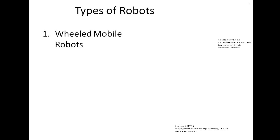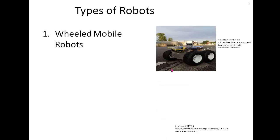For mobile robots, the first category is wheeled mobile robots. They have normal wheels — sometimes four, three, or two wheels. A four-wheel robot is stable, but a two-wheel robot is not statically stable and must be dynamically stabilized, like an inverted pendulum.